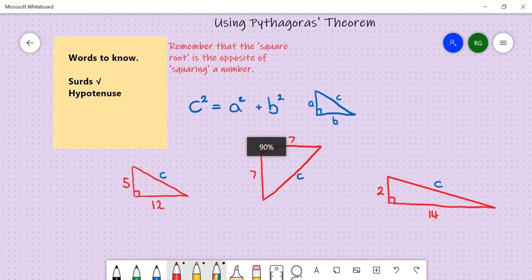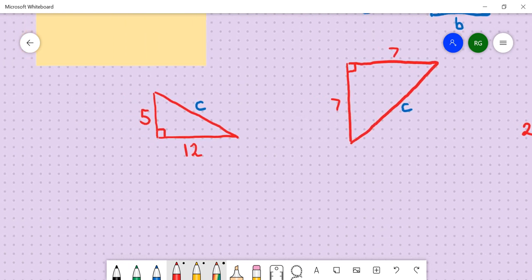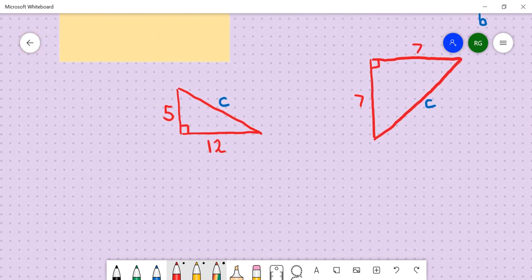Now we're going to have a look at a few examples here, starting down in the bottom left. Here we have a triangle, where we've been given the two shorter side lengths. One is 5, one is 12. A little note is that often when these images are drawn to scale, or close to scale,